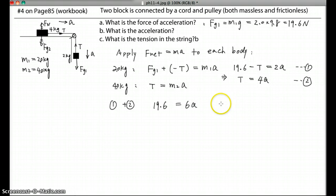So eventually you can solve: a equals 19.6 divided by 6. So 19.6 divided by 6 equals 3.2666, so I pick 3.3 as the answer. That's part b. We already solved a, now this is actually b.